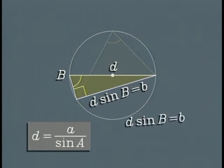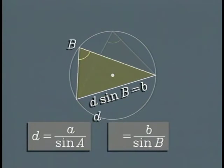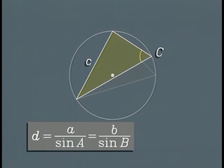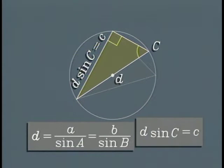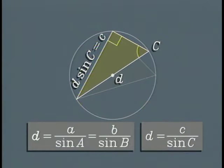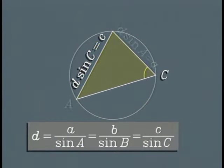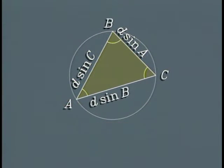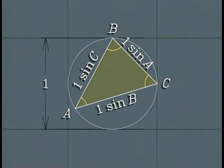The triangle becomes a right triangle with its hypotenuse along a diameter. The length of the side opposite angle A is the hypotenuse times the sine of A. Therefore, this ratio is equal to the diameter. The same argument can be applied to each of the other two sides, and we obtain the law of sines. When the diameter is equal to one, the length of a chord is equal to the sine of the inscribed angle.